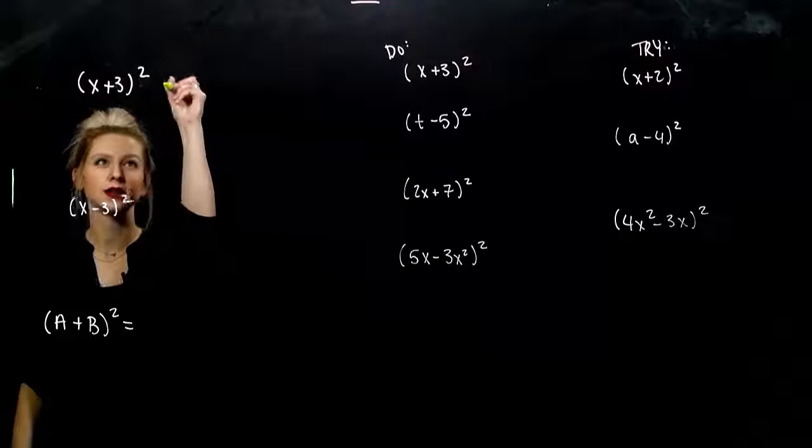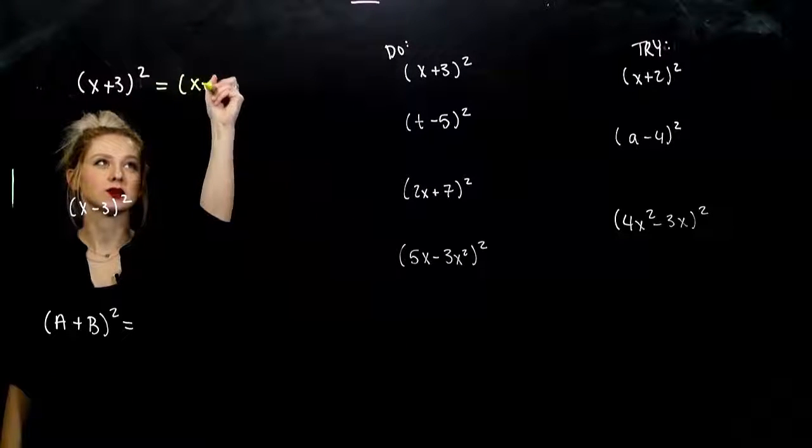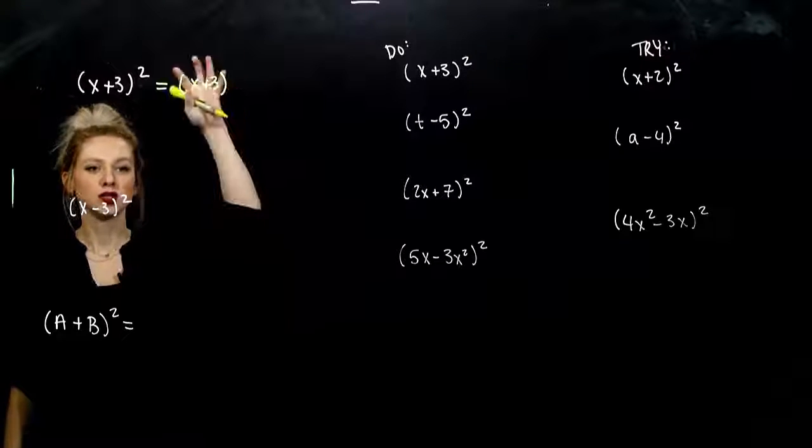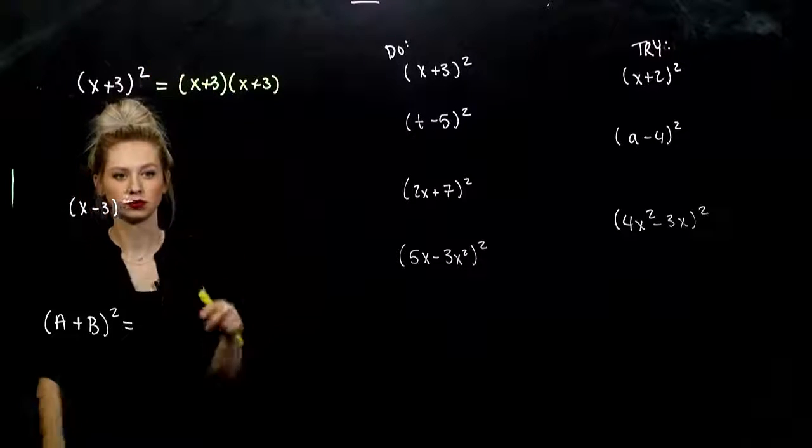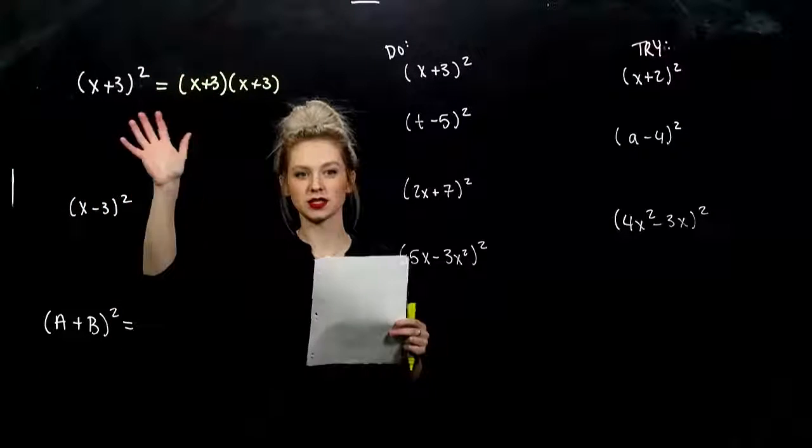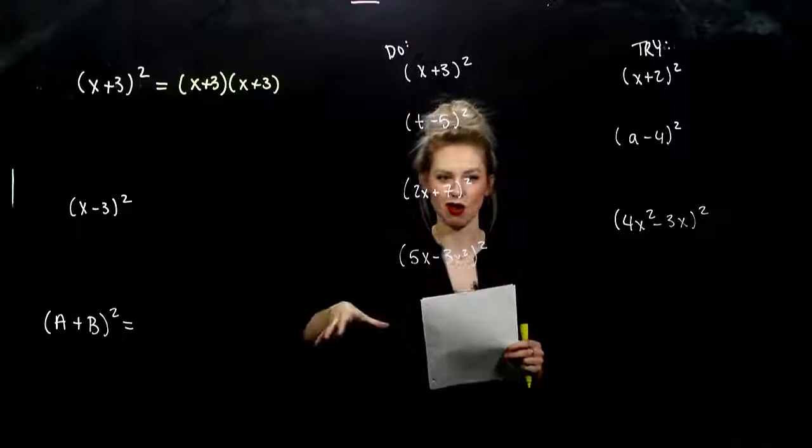What this is really saying is take X plus 3, multiply it times itself two times in total. We can't distribute over the sum because our middle term is going to be gone.